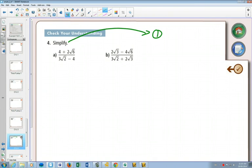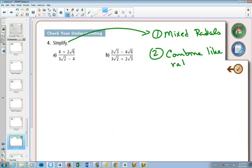One, we need to write things as mixed radicals. Two, we need to combine like radicals and like terms. If there are any like terms, we'll put them together.